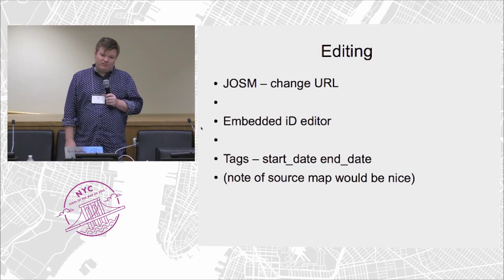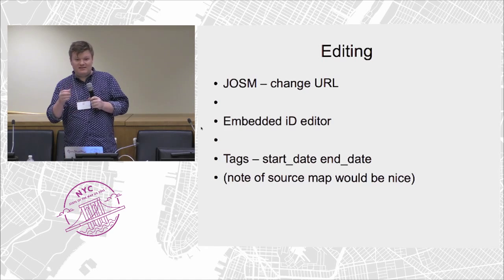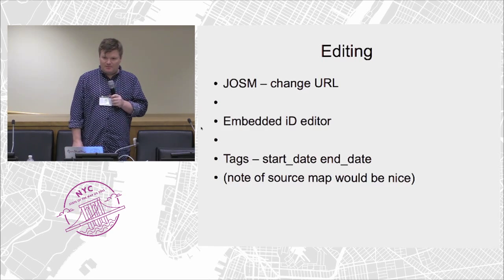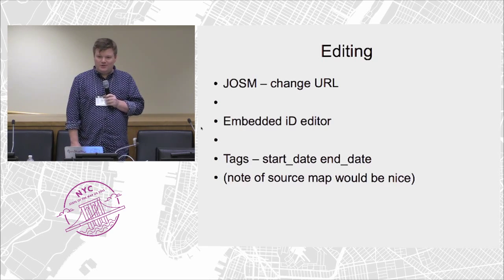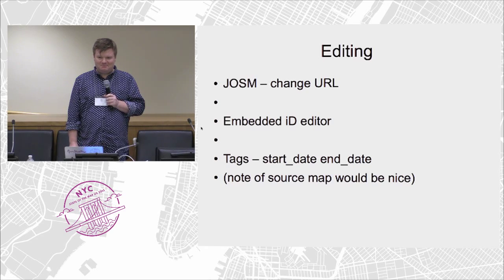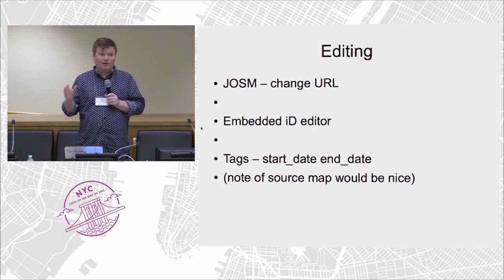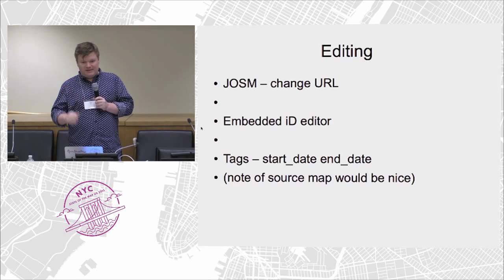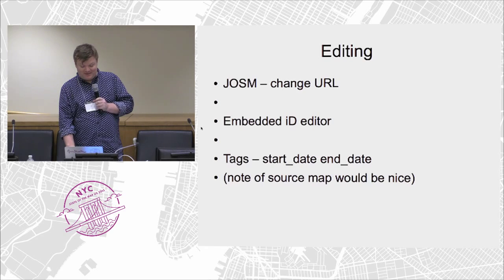If you've got JOSM, you can change the URL in preferences — it's reasonably straightforward. There is an embedded iD editor on the OHM website. The main tags for Open Historical Map are start_date and end_date, which use the ISO standard year-month-day format, though you can just put the year. A lot of people would say circa 20th century or Roman period — some sort of free tagging. And if you say where you got the data from, that'd be nice as well.